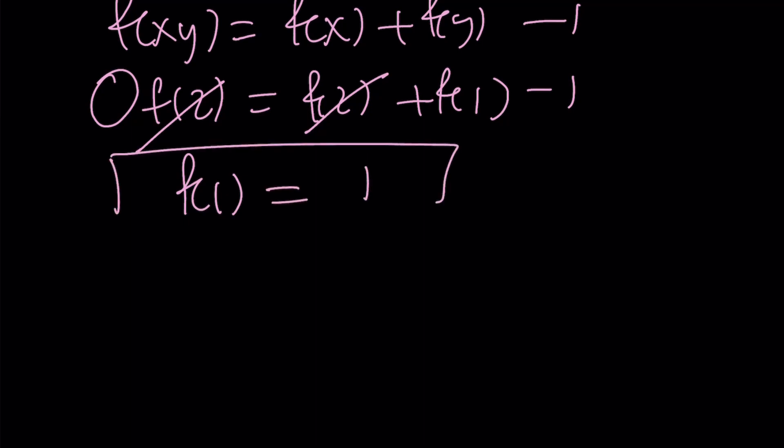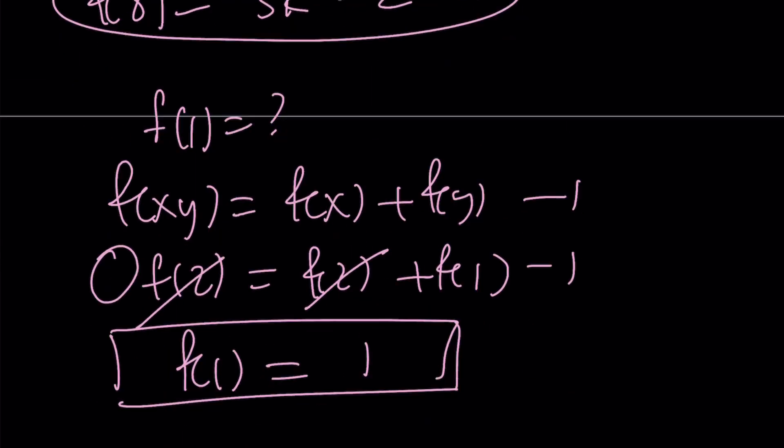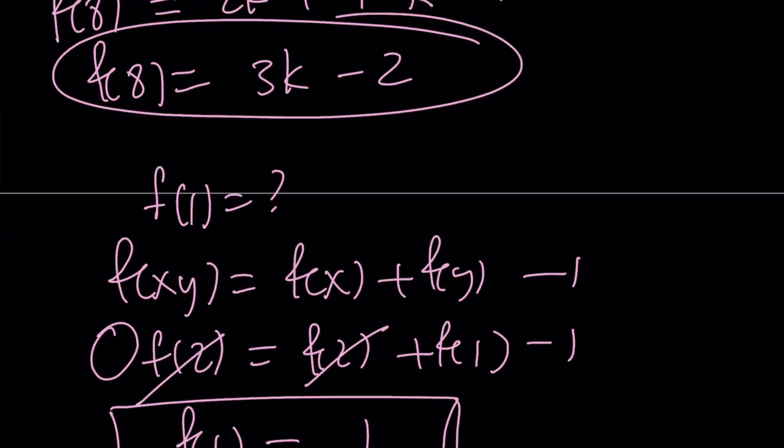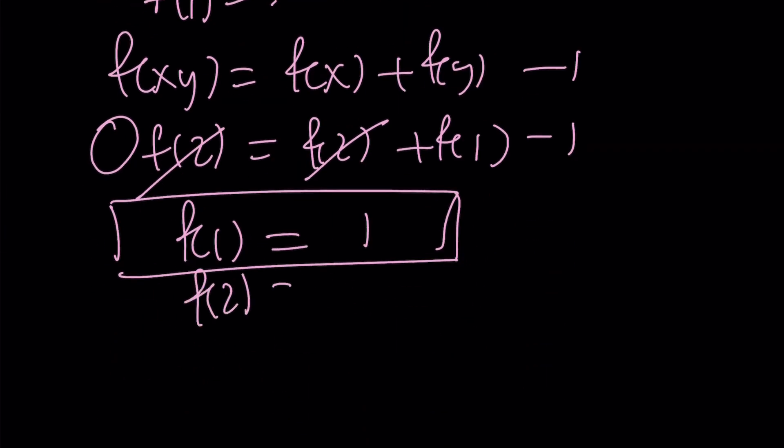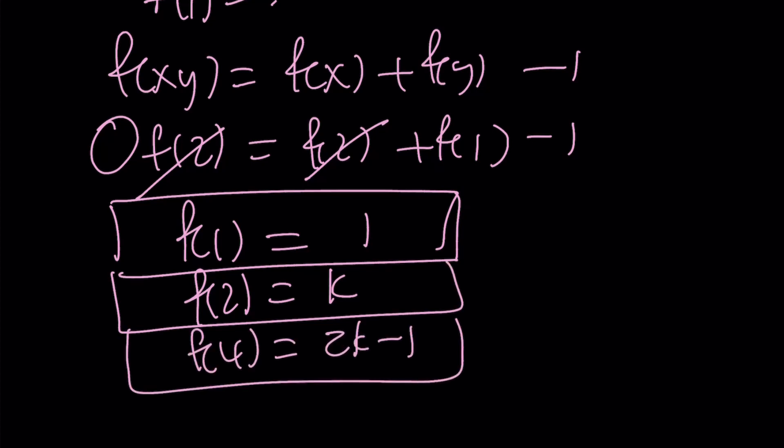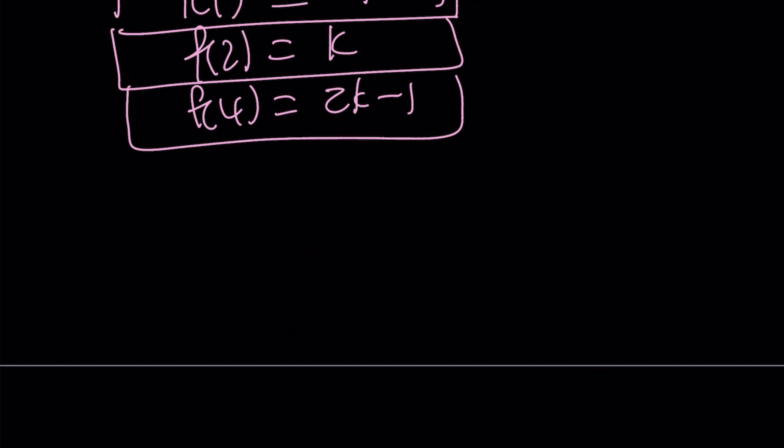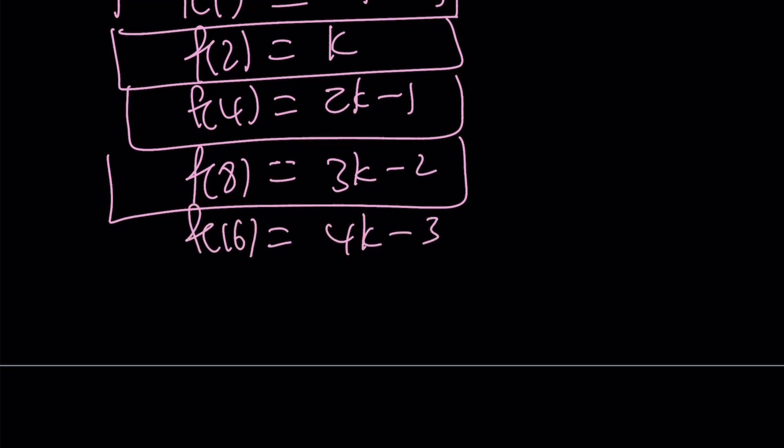All right, great. Now, the million dollar question is, can we find f of 2 to the power of n? Any power of 2. And let's go ahead and take a look at some of these results. f of 1, we got 1. f of 2 was given as k, right? f of 4 was 2k minus 1, remember? And then f of 16, but let's go ahead and write f of 8 first. What was f of 8? 3k minus 2. And f of 16 was 4k minus 3.